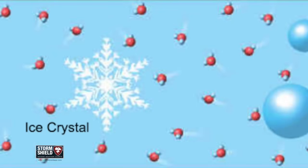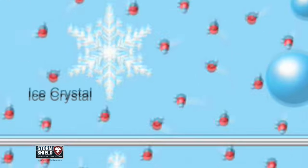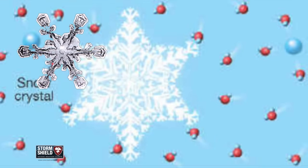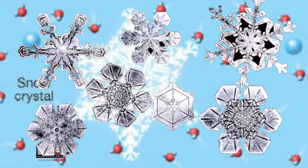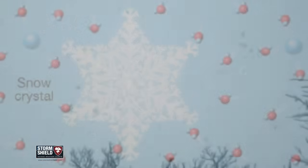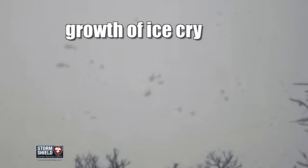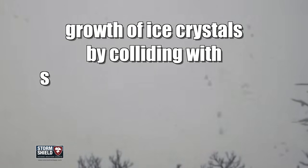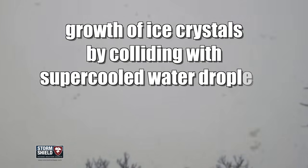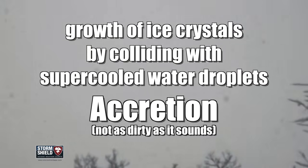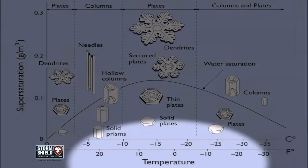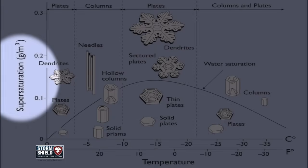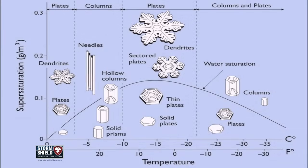These ice crystals continue to bump into more supercooled water droplets. As these fledgling ice crystals continue to grow, full-blown snowflakes are eventually formed. This process is called accretion. The size and structure of these snowflakes has everything to do with the temperature and humidity in which these flakes formed.